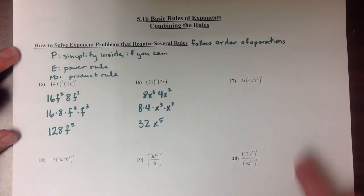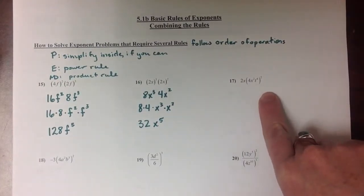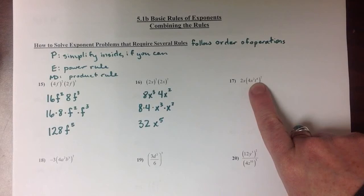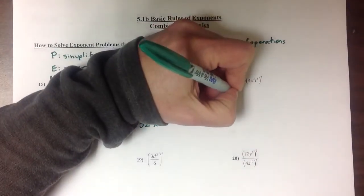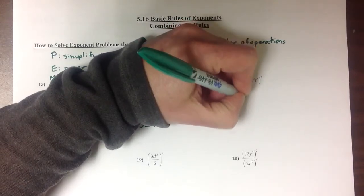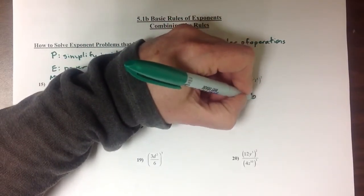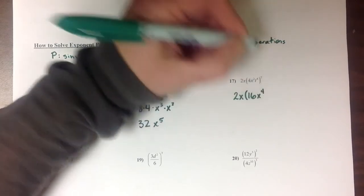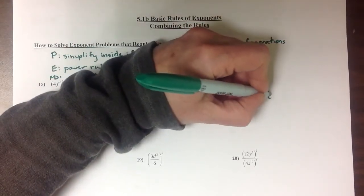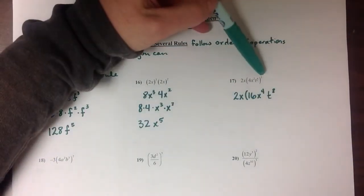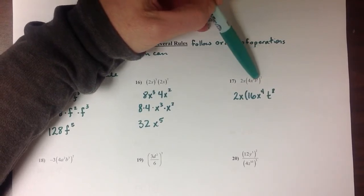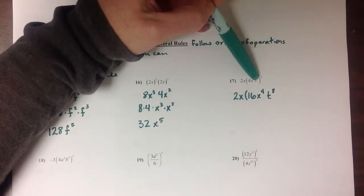In this last example, I have 2x times the quantity 4x squared t to the 4th all raised to the 2nd power. There's nothing that I can simplify inside my parentheses, so I go to the power rule. I'm going to leave the 2x as it is here for a minute. Square the 4, square the x squared, and square the t to the 4th. Just remember, this becomes 2 times 2 and 2 times 4 since we're distributing a power over a power.